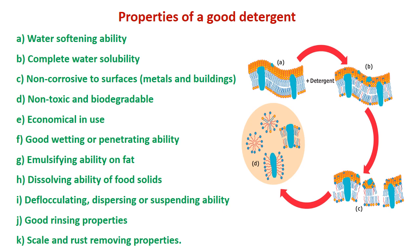Here we will see the properties of a good detergent: water softening ability, complete water solubility, non-corrosive to surfaces whether metals or other materials, non-toxic and biodegradable, economical in use, good wetting or penetrating ability, emulsifying ability on fat, dissolving ability of food solids, defloculating, dispersing or suspending ability, good rinsing properties, and scale and rust removing properties. These are some desirable ideal properties a detergent should have.